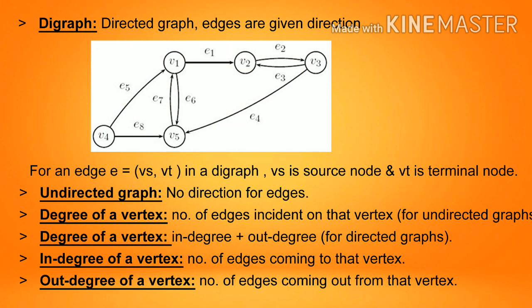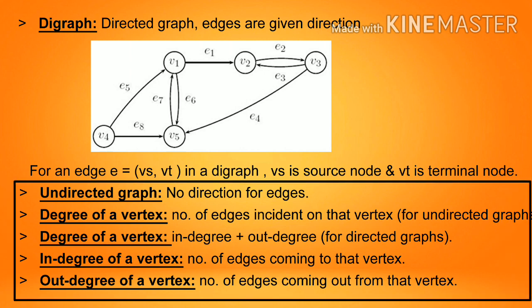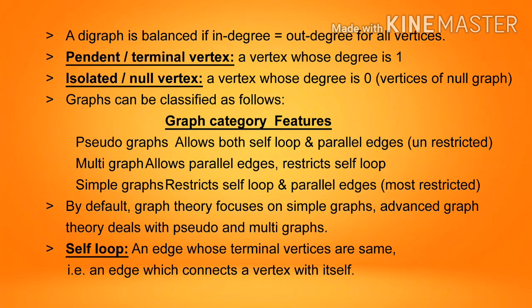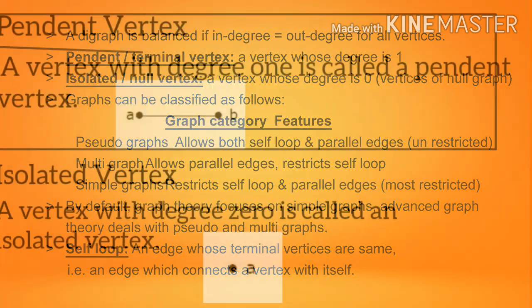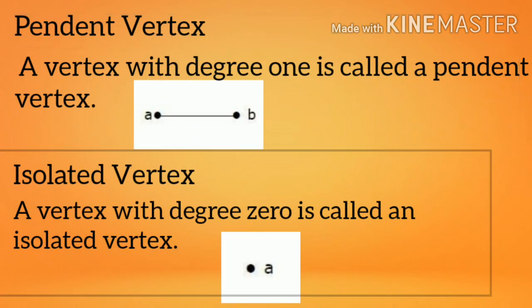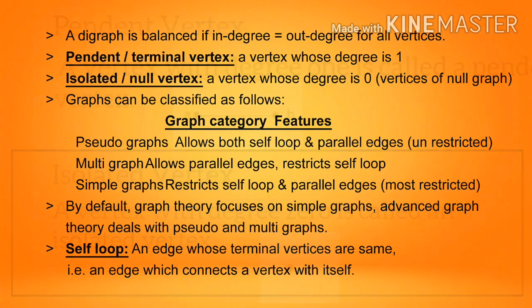Digraph (directed graph): edges are given a direction. For an edge e equal to (vs, vt) in a digraph, vs is the source node and vt is the terminal node. Undirected graphs have no direction for edges. For undirected graphs, degree of a vertex equals the number of incident edges. For directed graphs, degree equals in-degree plus out-degree. In-degree is the number of edges coming to that vertex; out-degree is the number of edges going out. A digraph is balanced if in-degree equals out-degree for all vertices. A pendant or terminal vertex has degree one; an isolated or null vertex has degree zero.